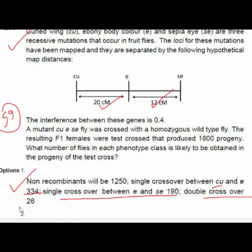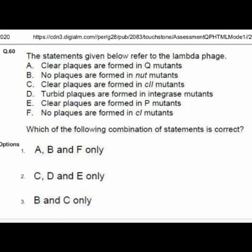Question 60 gives statements referring to lambda phage. Option 3 — B and C only — is correct: B — no plaques are formed in amber (ut) mutants; C — clear plaques are formed in cI mutants.